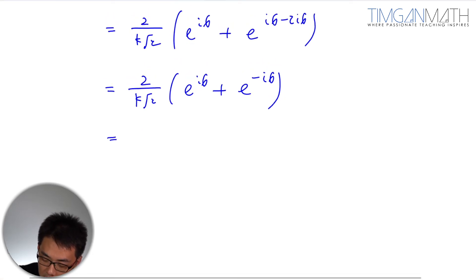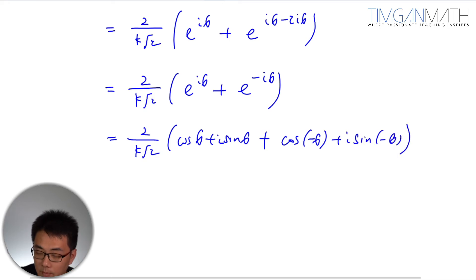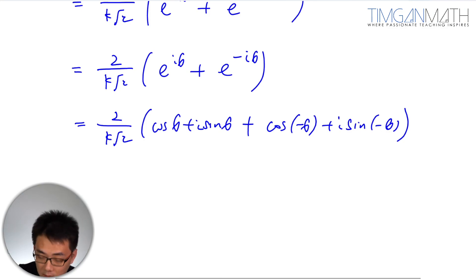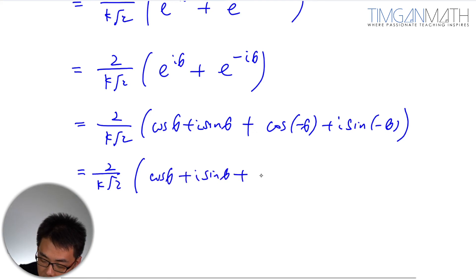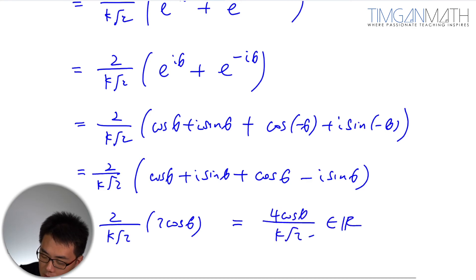And once again, this is done. We just have 2/(k·root 2) times (cosθ + i·sinθ + cos(-θ) + i·sin(-θ)). This is actually a real value because we know that this is 2/(k·root 2) times 2cosθ. And what is left behind is just 4cosθ/(k·root 2). This is a real value definitely. So shown.